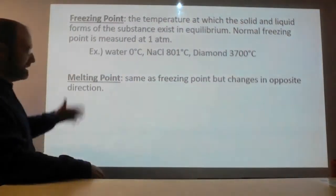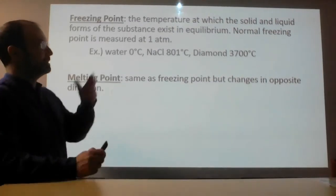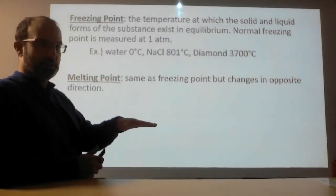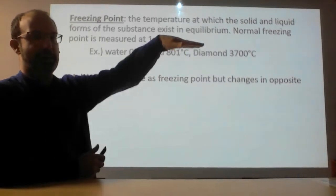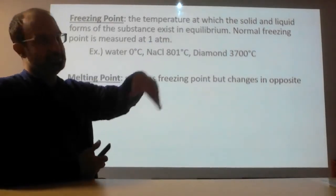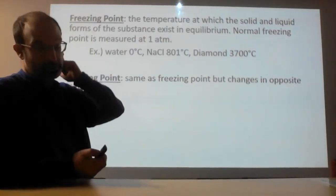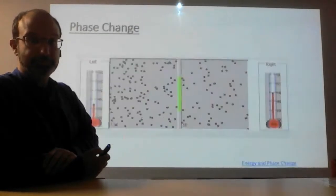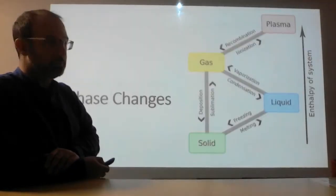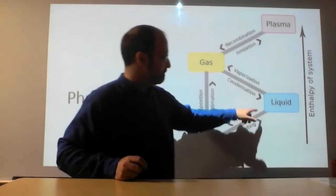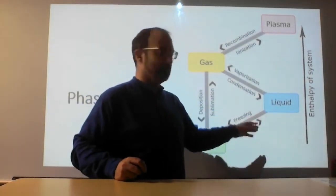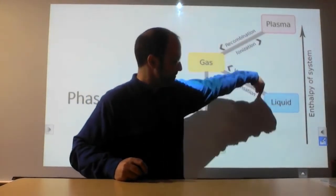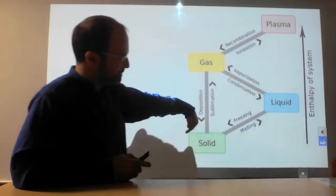Melting point — it's the same temperature as the freezing point, but we're talking about going the other way. Freezing point is about going from a liquid to a solid; melting point is about going from a solid back up to a liquid. As we saw on the diagram, freezing and melting are the same line but in two different directions — it's melting when it goes one way and freezing when it comes back the other way.